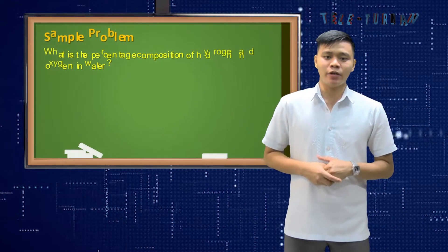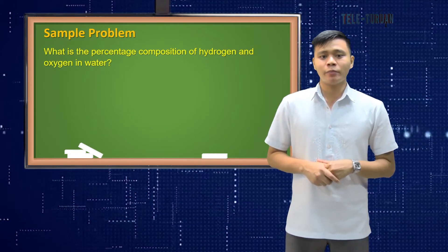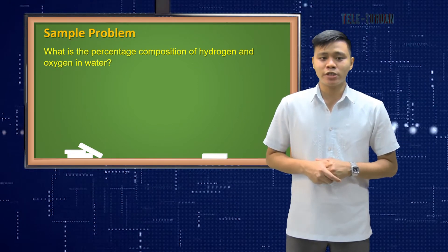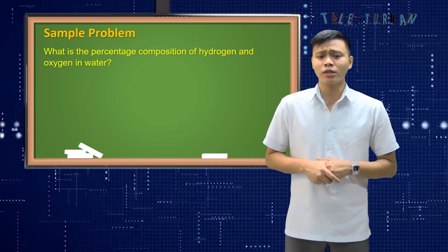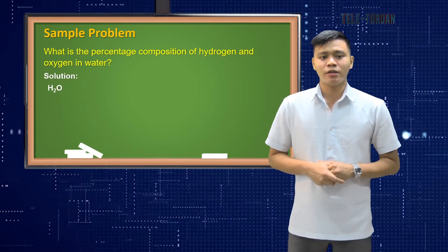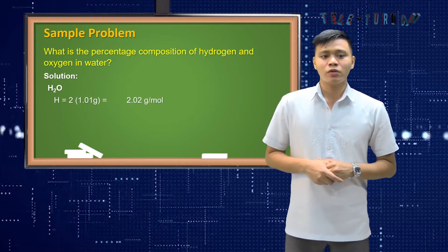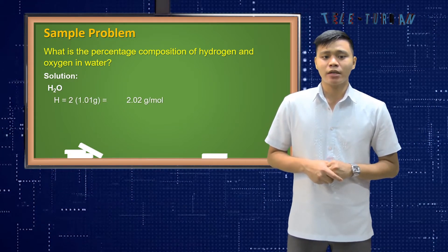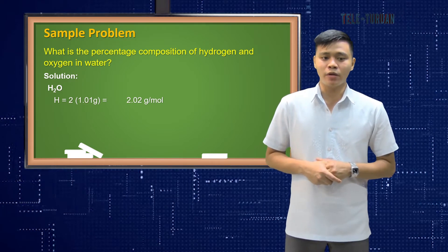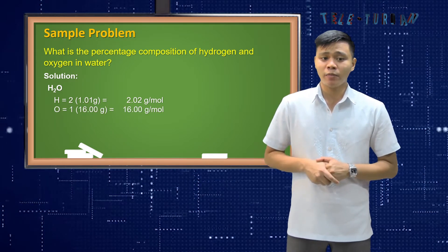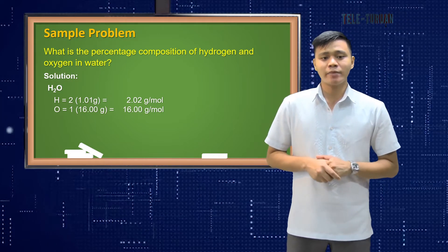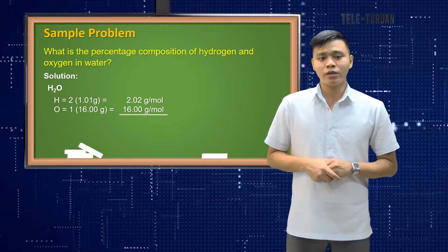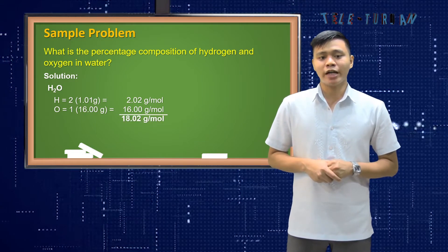Let us take an example. The compound, which is very important to us, the water or H2O, what is the percentage composition of hydrogen and oxygen in water? Here's the solution. H is equal to two atoms times 1.01 grams is equal to 2.02 grams per mole. And for oxygen, we have one atom of oxygen in the compound. So 1 times 16 grams is equal to 16 grams per mole. Adding it all is equal to 18.02 grams per mole.